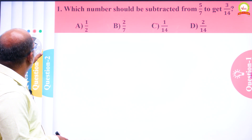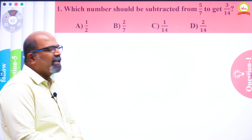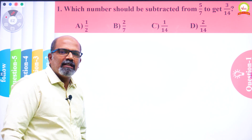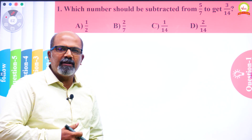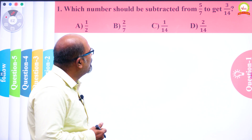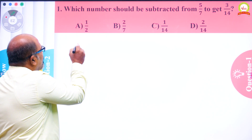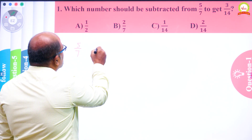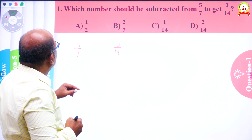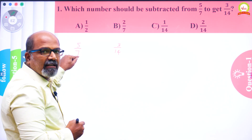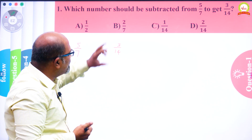This is the first question on the board. Which number should be subtracted from 5/7 to get 3/14? For this question your approach may be in two ways: the first way is by thinking, and the second way is by algebraic method. Here two numbers are given — 5/7 and 3/14 — and some unknown number should be subtracted from 5/7 so that the answer is 3/14.